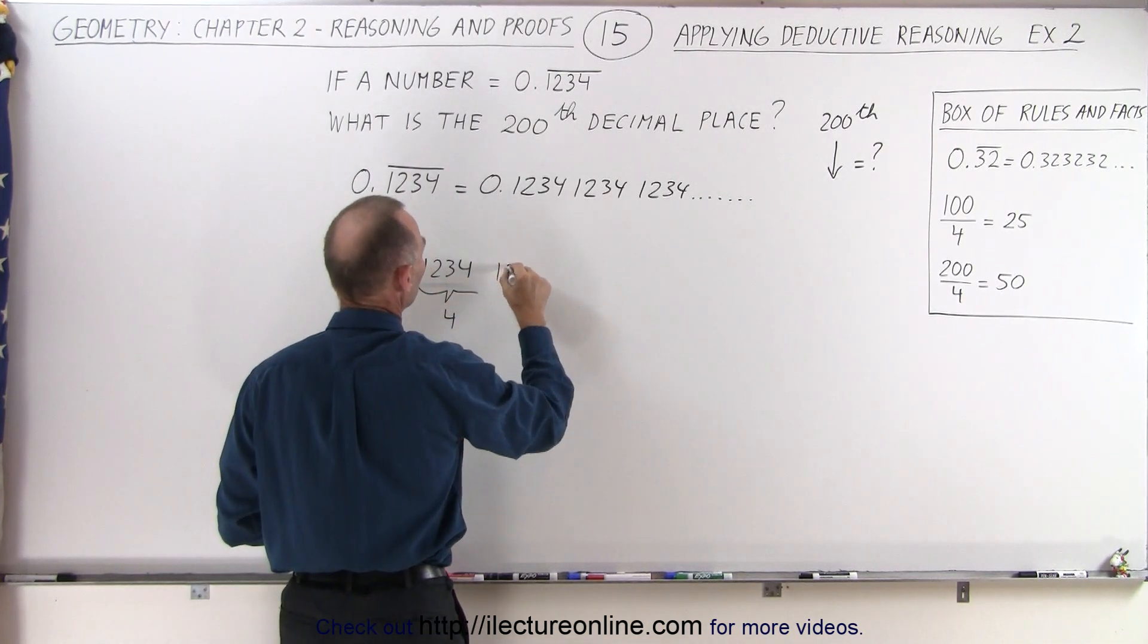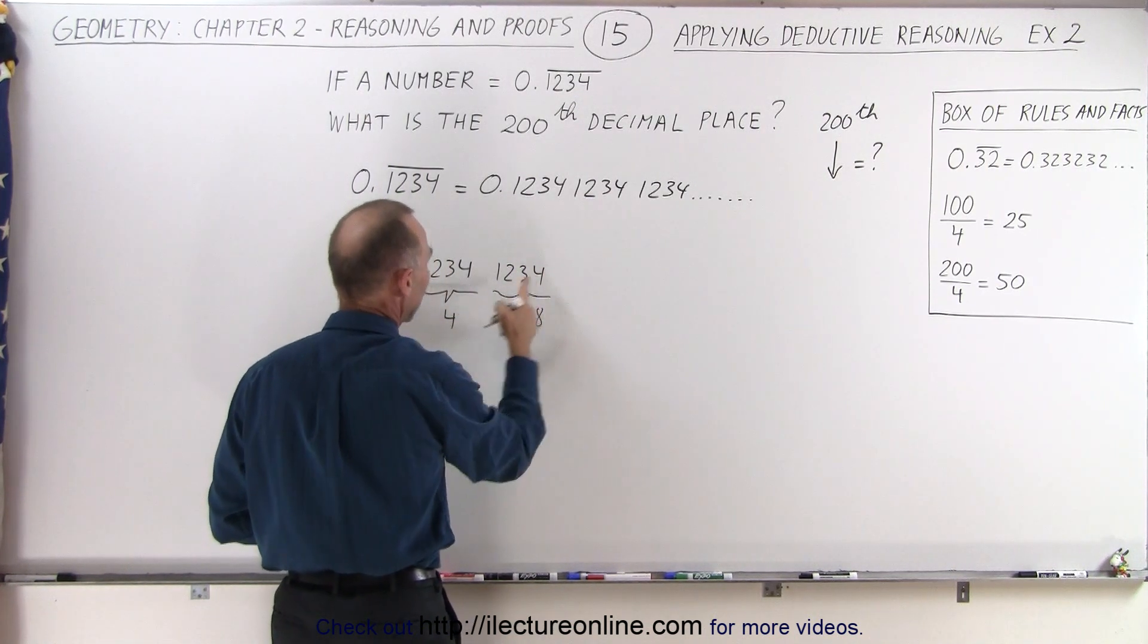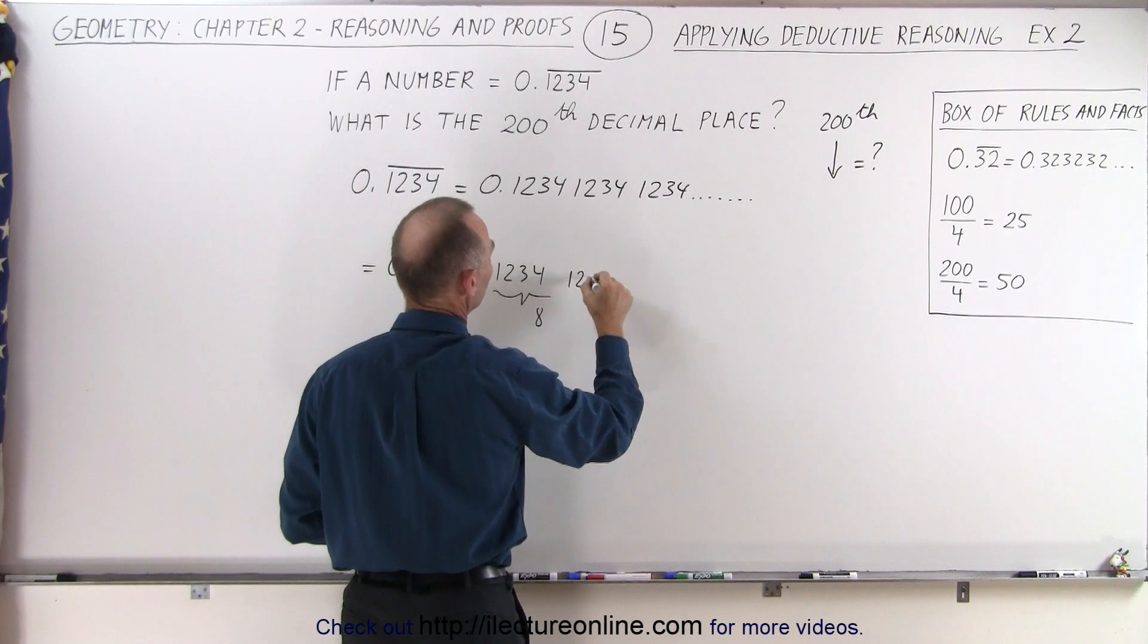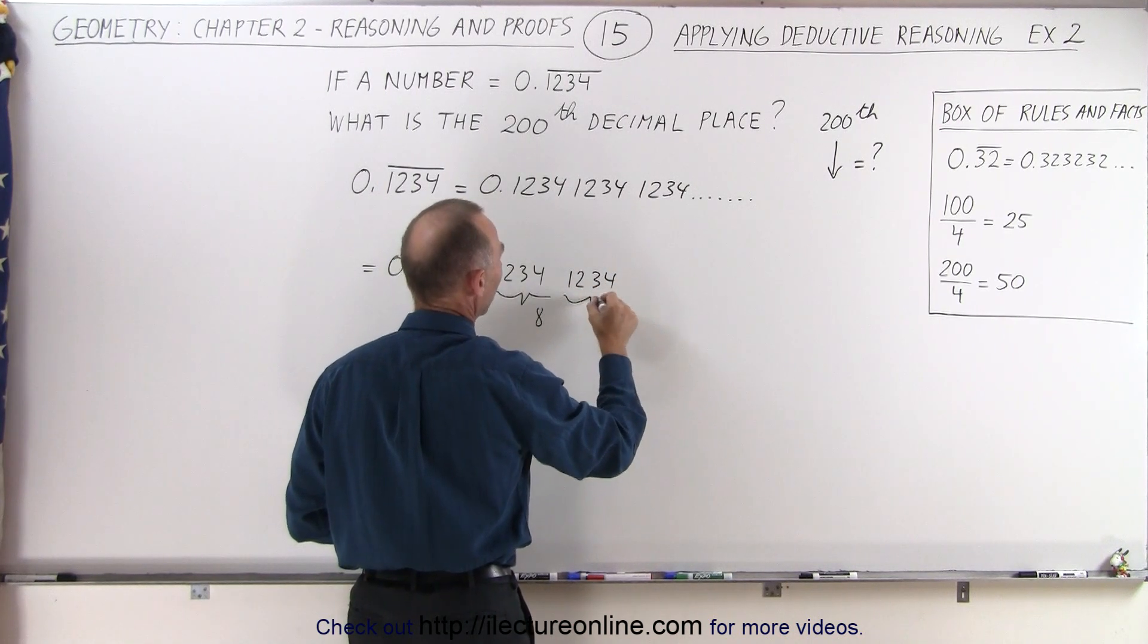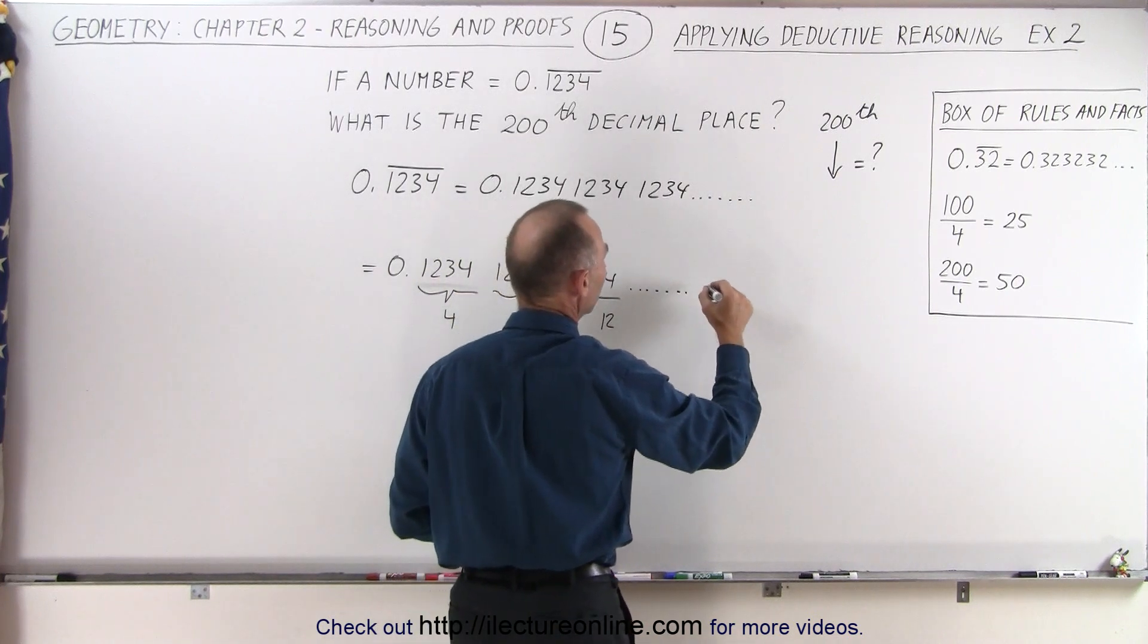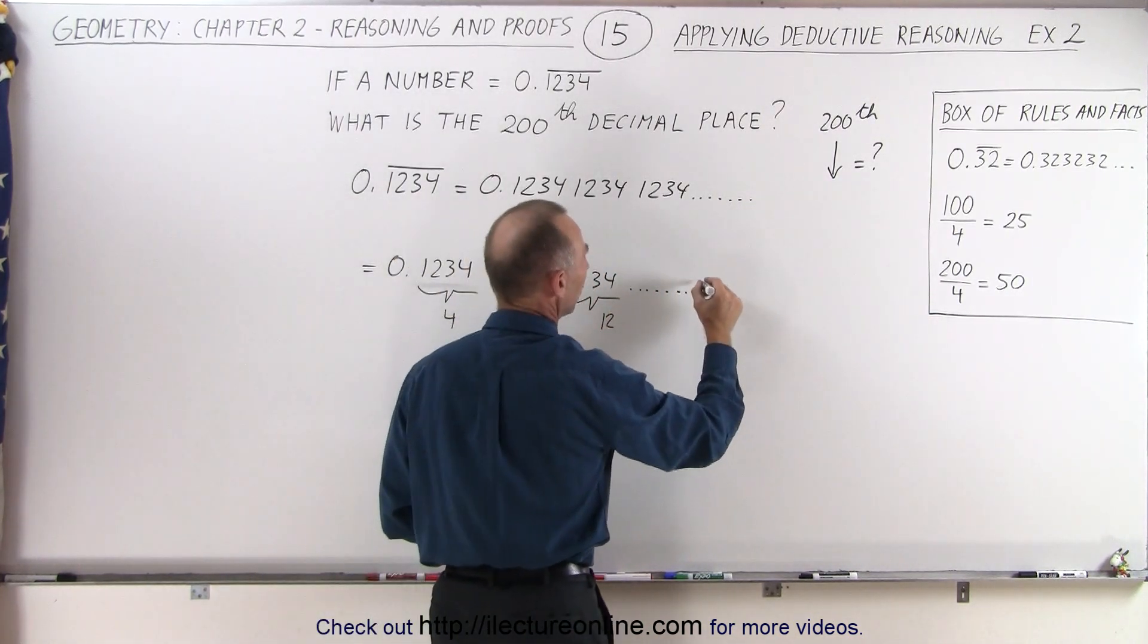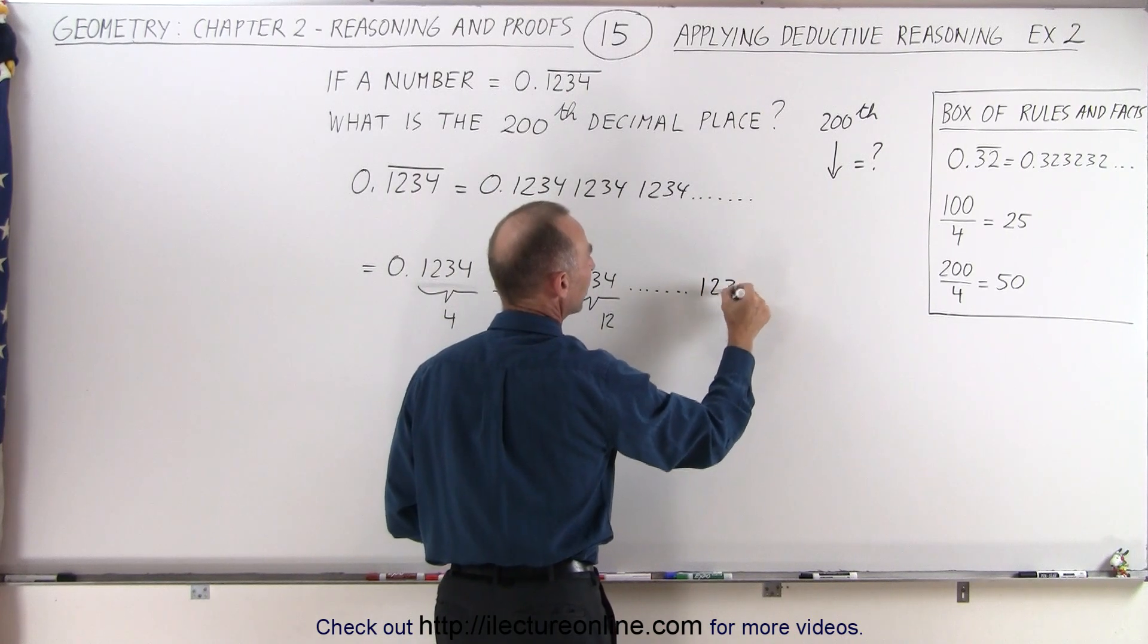And then we have 1, 2, 3, 4. So that's the next 4 numbers. So now we have 8. So that would be the 8th decimal place. And 1, 2, 3, 4. Now we have the 12th decimal place. And this will keep going to eventually, if we do this 50 times. 50 times 4 is 200. We have 1, 2, 3, 4.